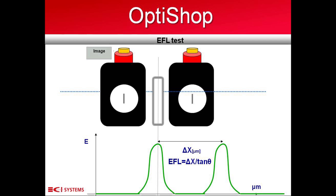The OptiShop measures the lens focal length while relying on its accurate encoders. The system scans the image on-axis and finds the image peak. We then rotate the stage at a small angle, represented by theta, and search for the shifted image peak again. We divide the total image shift, delta x, by the tangent of the angle and calculate the EFL.